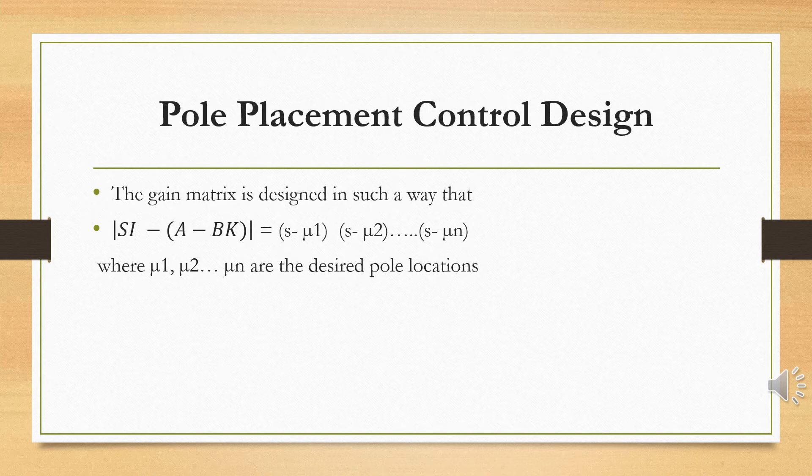The determinant of sI minus (A minus BK) set equal to zero gives the characteristic equation, which equals the product (s minus mu1)(s minus mu2)...(s minus mu_n), where mu1, mu2, ... are the desired pole locations. By varying the gain matrix K, we can place the poles at any desired location.